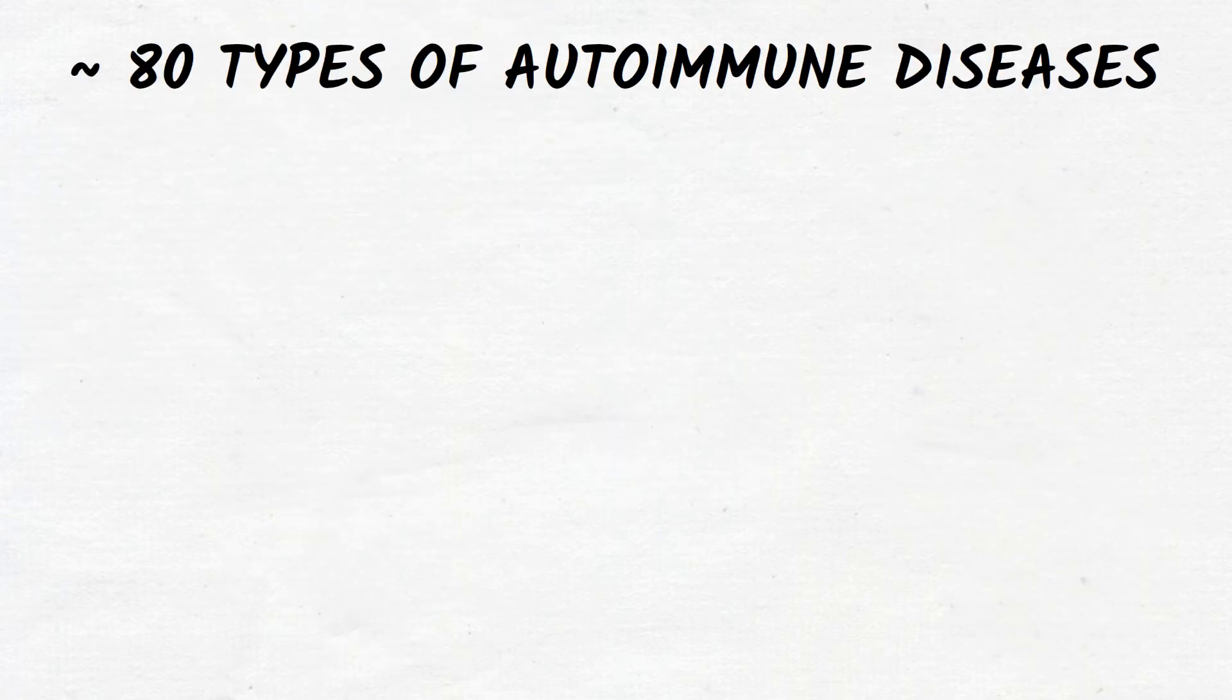There are over 80 types of autoimmune diseases which can affect almost any part of the body.